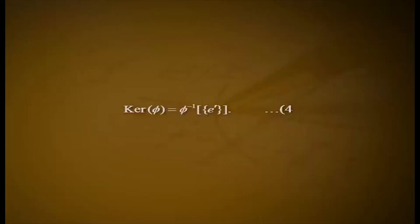Theorem 9: If phi from G to G dash is a group homomorphism, then ker phi is a normal subgroup of G. Proof: We note that ker phi equals phi inverse of the set {E dash}. Also, noting that the trivial subgroup {E dash} is a normal subgroup of G dash, Theorem 8 implies that phi inverse of {E dash} is a normal subgroup of G. Hence ker phi is a normal subgroup of G.